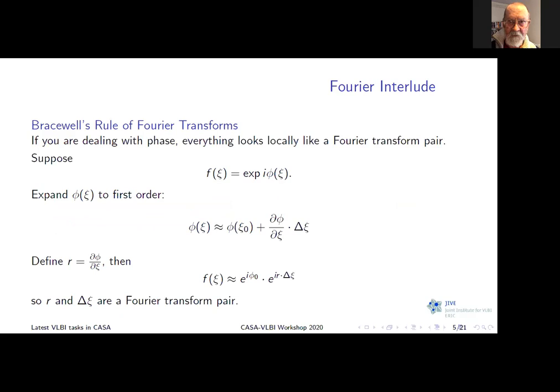When you're looking at a complex exponential of phase that's a function of anything at all, then locally it's going to look like a Fourier transform pair of coordinates. You can take the derivative of your function, introduce a new coordinate which is that derivative, and you automatically have a Fourier transform pair. We're going to see how that becomes relevant when we develop the theory of fringe fitting.